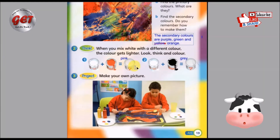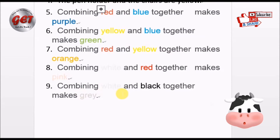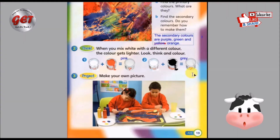小朋友们，麻烦你们用粉红色把你的课本这边涂上颜色，好不好？Next — Combining white and black together, mix gray. 当我们把白色和黑色混合在一起的时候呢，我们得到的是灰色。小朋友，麻烦你们用灰色涂在课本这个圆形的部分。